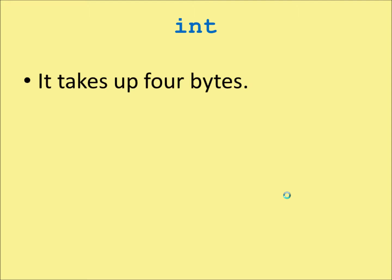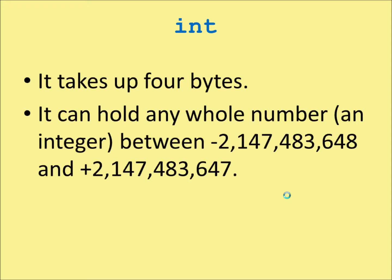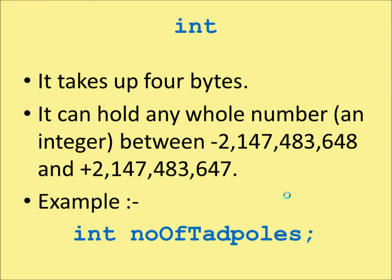Then we have integer. This takes up four bytes, and it can hold a whole number — an integer — between, more or less, minus 2,000,000 and plus 2,000,000. For example, we might have something like: int numberOfTadpoles — where we're counting the number of tadpoles in a pond.